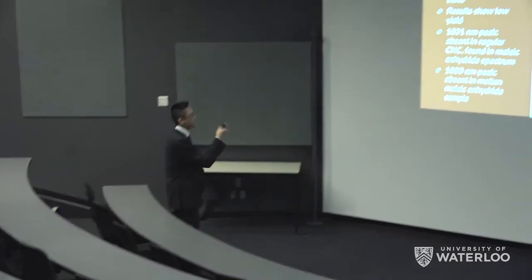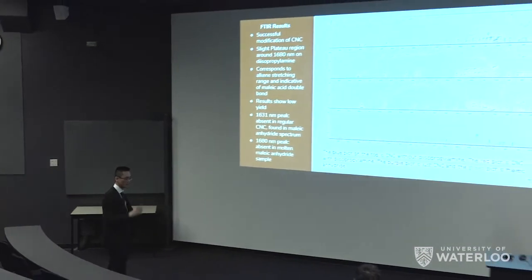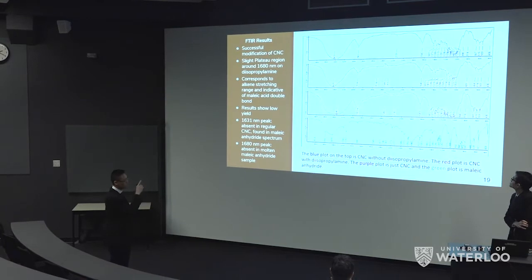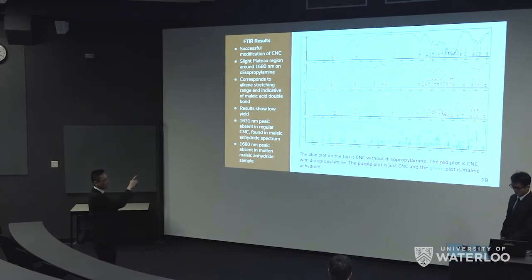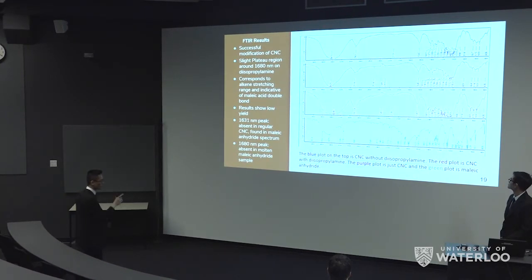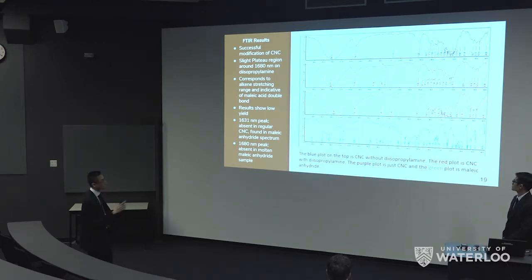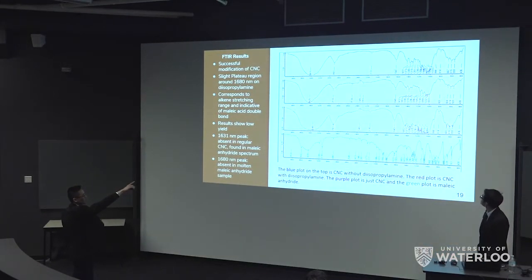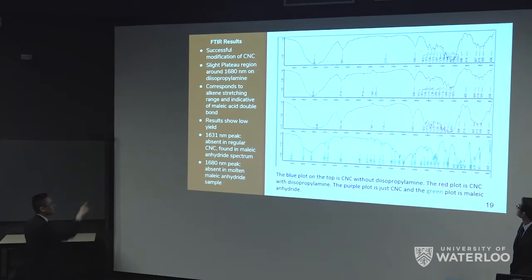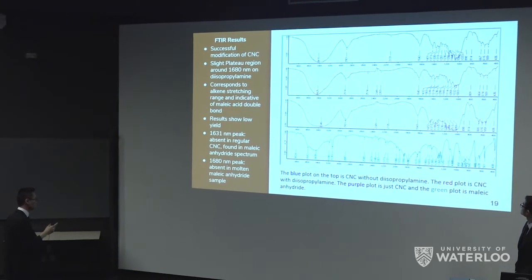For FTIR, we have four samples: CNC reacted with maleic anhydride without a base; CNC reacted with maleic anhydride with a base — diisopropylamine — which helps catalyze the reaction; pure CNC; and pure maleic anhydride. What we're looking for is the presence of a C=C double bond stretching signal in FTIR, typically found at 1680 to 1640 cm⁻¹. In the second sample, you can see that plateau region around 1680, corresponding to our vinyl stretching signal. Comparing to the negative controls — without base and pure CNC — you don't see that signal, which proves that our reaction has proceeded.